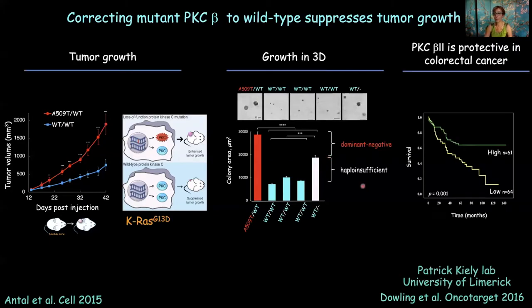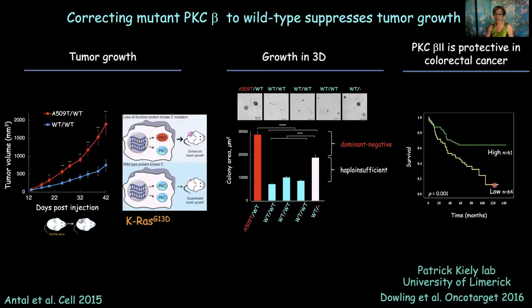We collaborated with Patrick Achillesab at the University of Limerick to show that in colon cancer patients, if we look at protein levels of PKC-beta at distal tissue away from the tumor, patients with relatively high amounts of PKC-beta had a much better survival outcome than patients with low PKC-beta. It's pretty clear that PKC-beta is a bona fide tumor suppressor.